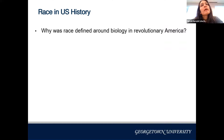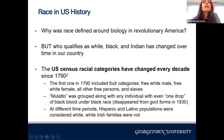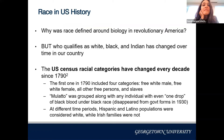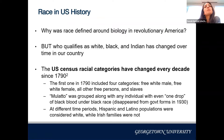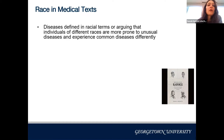Race in U.S. history was tied to biology because the country was founded on justice and liberty for all — the only way to justify slavery simultaneously was to make race an innate, fixed biological characteristic. But who qualifies as white, Black, or Indian has changed over time. Every decade, U.S. Census racial categories have changed since 1790. At one point, any individual with even one drop of Black blood was grouped under the Black race, while Hispanic and Latino populations were considered white and Irish families were not.